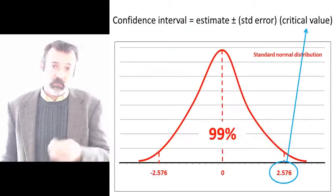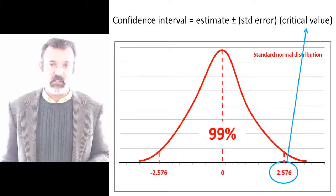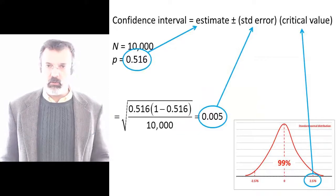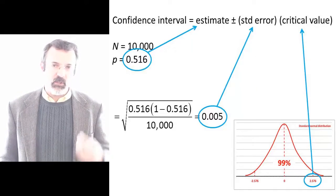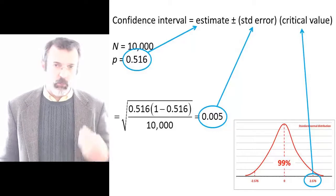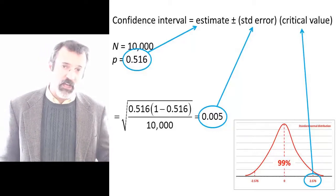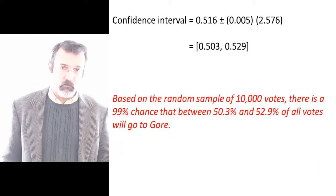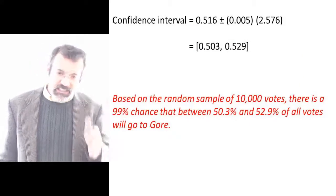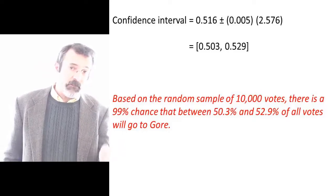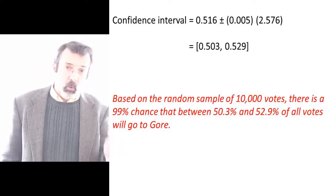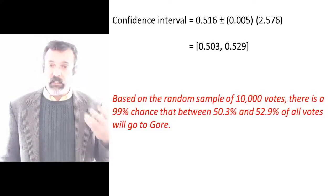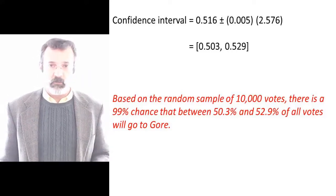We're making a 99% confidence statement, so the critical value is plus or minus 2.576. Based on these 10,000 observations, the media concluded that there was a 99% chance that the population proportion of votes going to Al Gore would be somewhere between 50.3% and 52.9% of the vote. Because even on the low end of 50.3%, the proportion was above 50%, the media was 99% certain that Al Gore would win Florida.